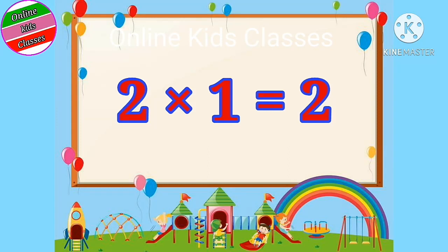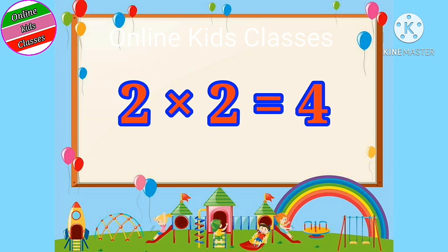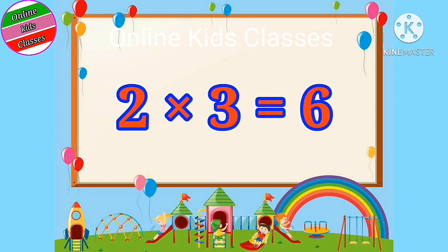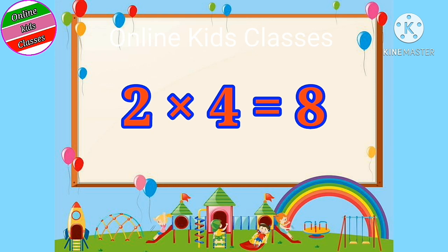Two ones are two. Two twos are four. Two threes are six. Two fours are eight.